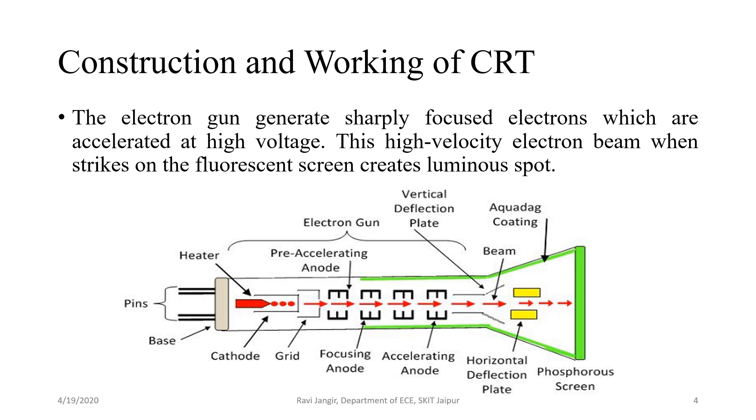Now, the working of CRT depends on the movement of electron beams. The electron gun generates sharply focused electrons which are accelerated at high voltage. This high velocity electron beam when strikes the fluorescent screen creates a luminous spot.